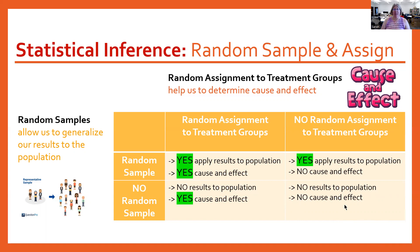So if you're asked whether we can apply or generalize these results to the population, check to see if they have a random sample. If you're asked whether you get cause and effect, check to see if they have random assignment to treatment groups. That's the most important part of this.